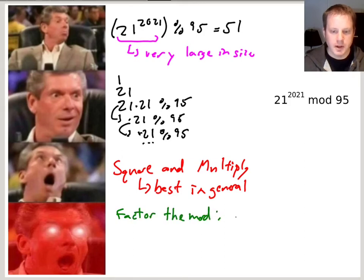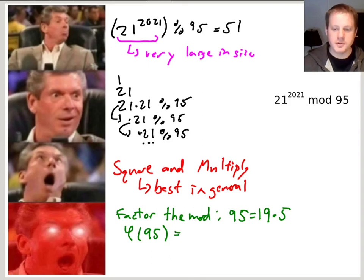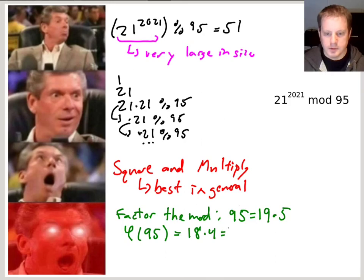That allows us to compute phi of n. So phi of 95, this is the Totient function. And we know the formula for the Totient when it's the product of two primes is P minus 1 times Q minus 1. So this would be 18 times 4, which I think is 72. So 72 is the Totient.